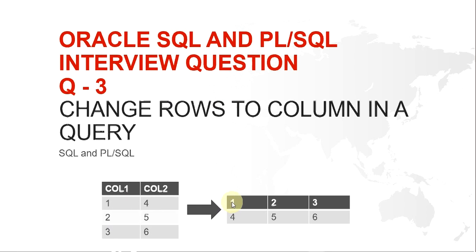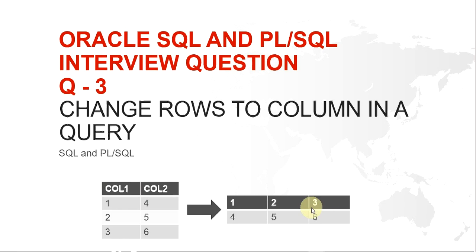And if you are asked to change it so that 1, 2, and 3 are in one row and 4, 5, 6 in another row — what you are doing is changing these three rows into three columns. So you might come across such questions, or something similar, where you need to perform the task of changing rows into columns.